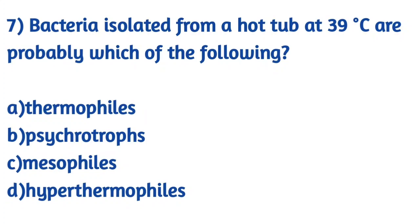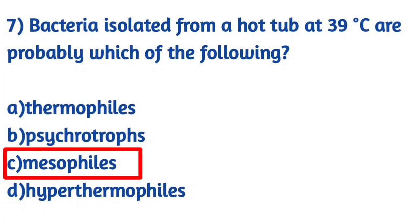Question number 7: Bacteria isolated from a hot tub at 39 degrees Celsius are probably which of the following? Options are thermophiles, psychrotrophs, mesophiles, and hyperthermophiles. The right answer is C, mesophiles.